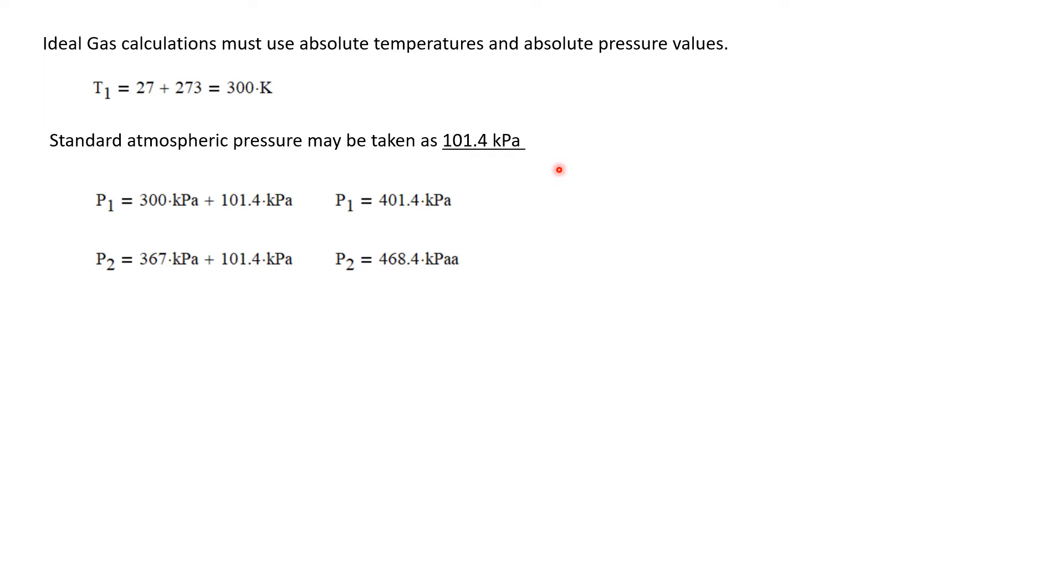I'm going to take standard atmospheric pressure at sea level to be 101.4 kilopascals. You might have used 100 kilopascal, but this would be more accurate. We know that the absolute pressure equals the gauge pressure plus the atmospheric pressure. So the absolute pressure at P1 is its gauge pressure plus the atmospheric pressure, giving us 401.4 kilopascals.